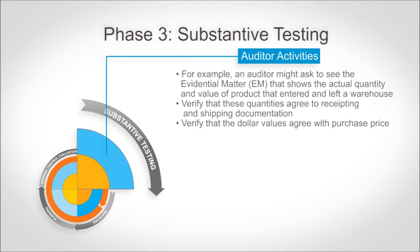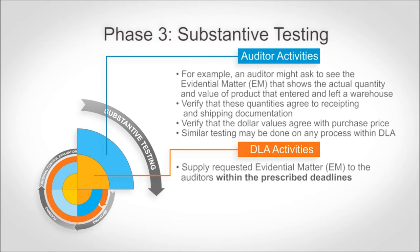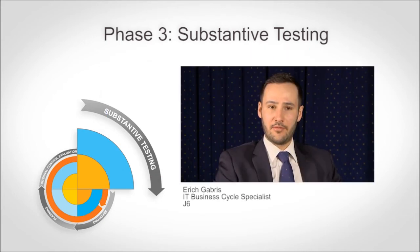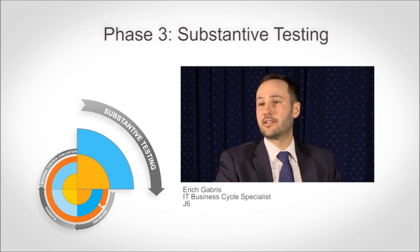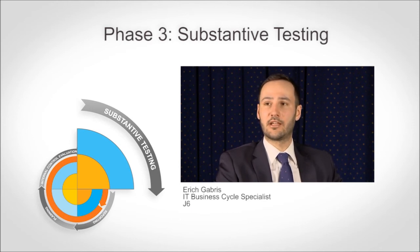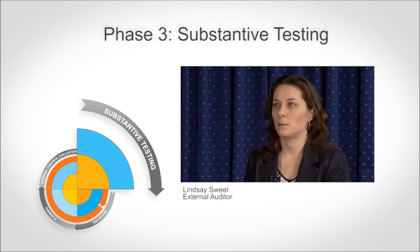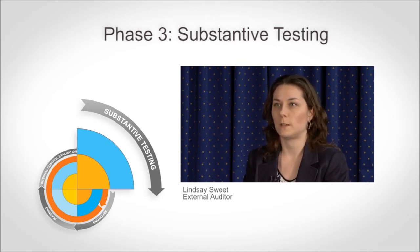While this specific example applies to distribution, similar testing may be done on any process within DLA. DLA employees will be asked by an audit liaison to provide evidential matter to the auditor and to explain any differences or identified discrepancies. If you don't have good policies and procedures at the organizational level that dictate how you perform your controls and processes in a consistent manner, it's very difficult to provide predictable evidence to auditors that you've completed your processes as documented. Try to be familiar with your business processes so you can speak confidently and knowledgeably about your business every day.